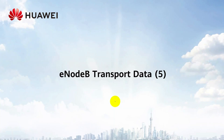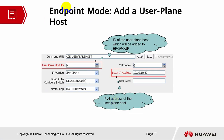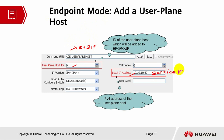eNodeB transport data part 9 - endpoint mode: how to add a user plane host. User plane host is referring to the eNodeB IP, but this one is in endpoint mode, so we add the host ID. The local IP refers to the service IP; in some cases the signaling IP and the service IP will be separated, and in some cases they will be sharing. Let's see some examples of the user plane host.